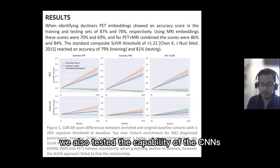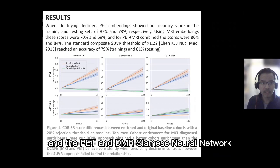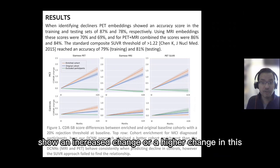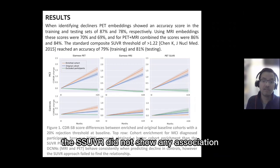We also tested the capability of the CNNs and these three approaches for observing change in the Clinical Dementia Rating Sum of Boxes within a period of 24 months. The PET and MR Siamese neural networks showed a higher change in this cognitive score compared to the SUVR. For control participants, this was consistent for the PET and MR CNNs. For the SUVR, it was detrimental — the SUVR did not show any association with cognitive decline in control participants, only in MCI participants.